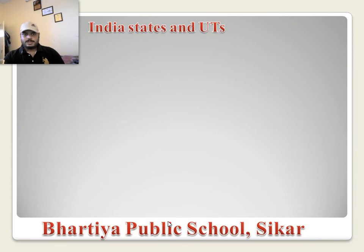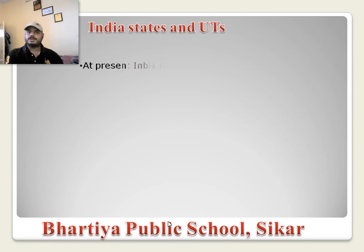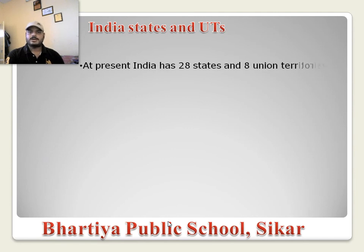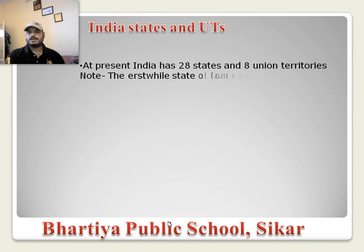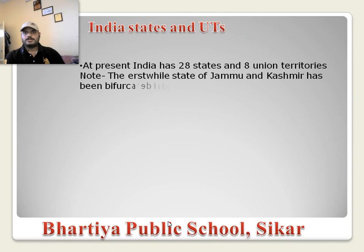At present India has 28 states and 8 union territories. After the abolition of Article 370, the state of Jammu and Kashmir was bifurcated into two parts — Jammu & Kashmir and Ladakh union territory. Also, two union territories of India — Daman & Diu and Dadra & Nagar Haveli — were merged together in December 2019.